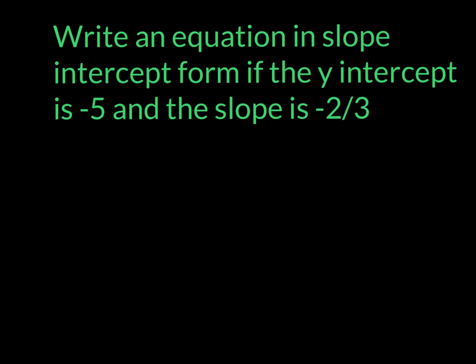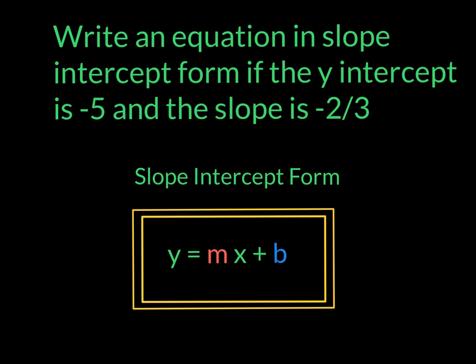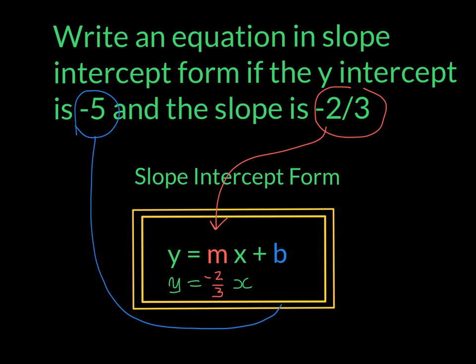Now we're going to write an equation in slope-intercept form if the y-intercept is negative 5 and the slope is negative 2 thirds. Remember, we need to use the slope-intercept form of the equation. So we have the y, the equal sign, the x, these parts are fixed in the slope-intercept form. We have the negative 2 thirds, which is the slope, we place it where m is, which is right in front of the x, then we have the y-intercept, which is negative 5, and we're going to place it wherever we see b, and now we have our equation written in slope-intercept form.